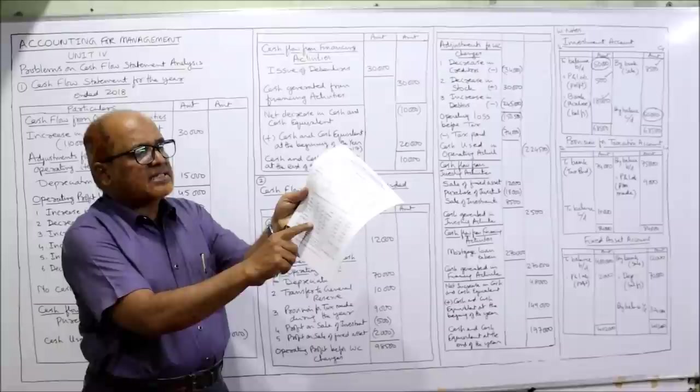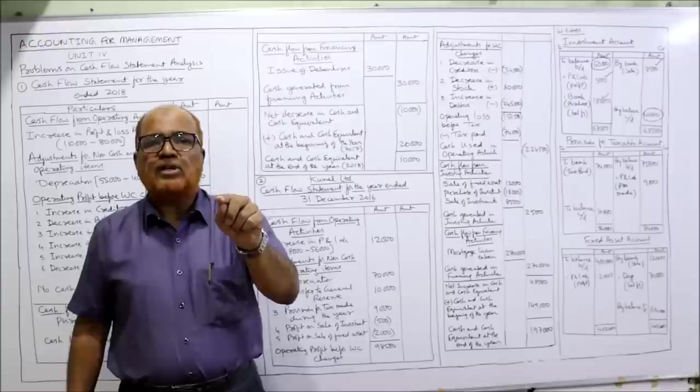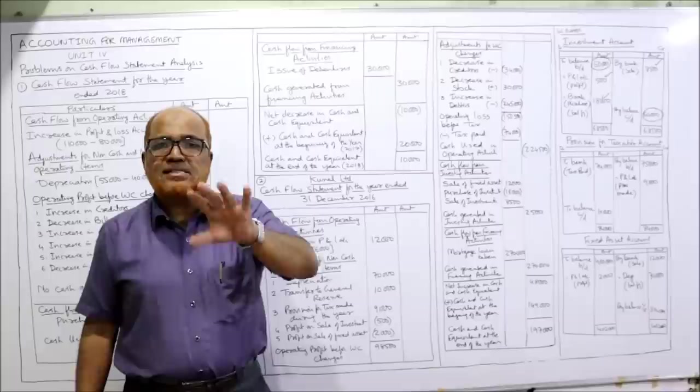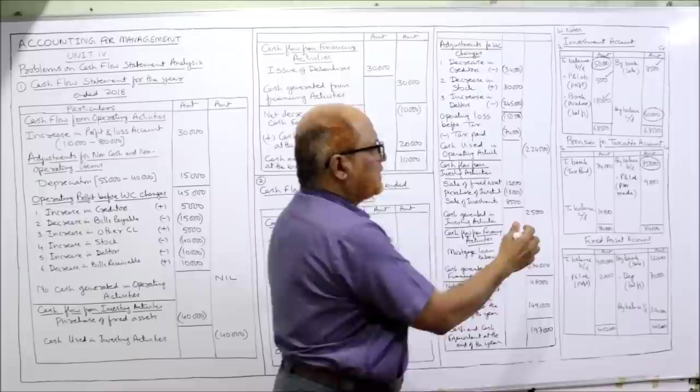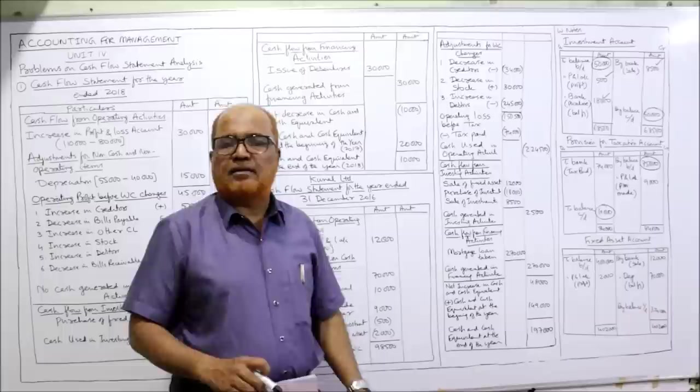Provision for taxation: last year 75,000, current year 10,000. Remember, provision for taxation is a liability — all liabilities show credit balance, assets show debit balance. So provision for taxation: credit side opening balance 75,000, closing balance carried down 10,000. Opening balance on credit side, closing balance on debit side. From the adjustment: tax provision made during the year 9,000.